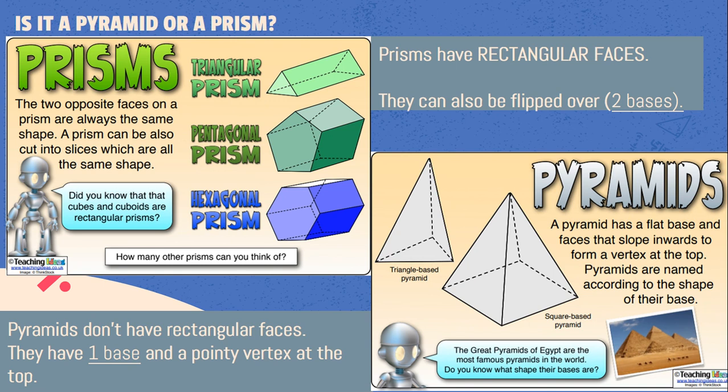So if it is a prism, then the two opposite sides are the same. They have the same face. It could be triangle, it could be a pentagon, it could be a hexagon, it could be a square, it could be a rectangle. But remember that a prism also has rectangular sides, and you can see that here.